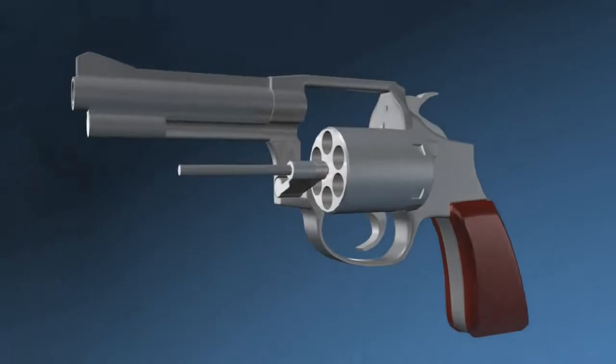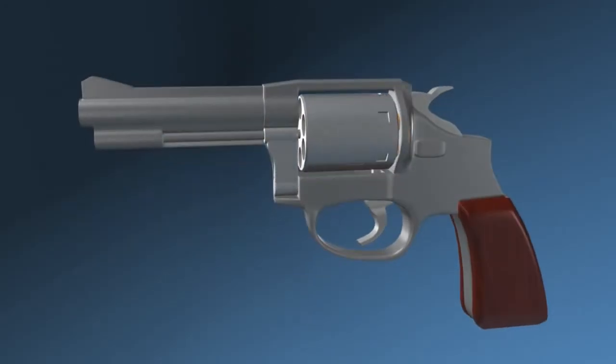The revolver for this example is double action, meaning that the hammer is cocked back when pulling the trigger and once the trigger is pulled all the way back, the hammer is released to hit the firing pin.